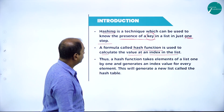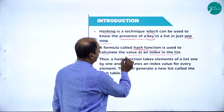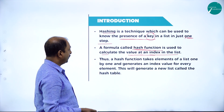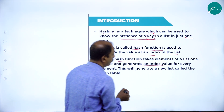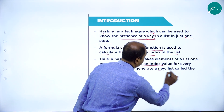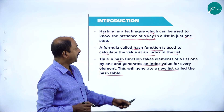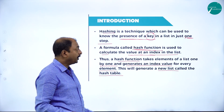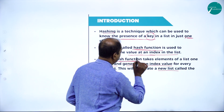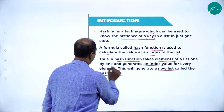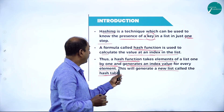Here we are using one more concept called hash function. With the help of hash function, we are going to calculate the value at an index in the given list. A hash function takes an element of a list one by one and generates an index value for every element. This will generate a new list called hash table. According to this algorithm, this is the given list and, by using a hash function, it is going to create one more table called hash table. It takes elements of a list one by one, generating an index value for every element in the given list.